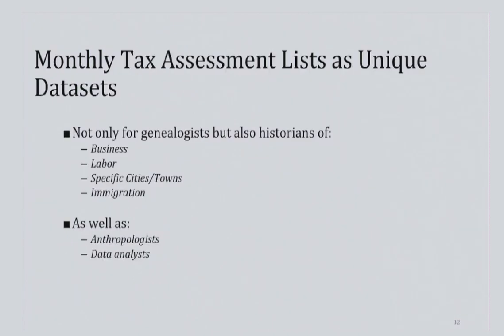There aren't too many records in the National Archives that so regularly and frequently track any one aspect of the life of the average American. Undoubtedly, the information recorded would be invaluable to the descendants of that individual. Beyond that, these records should be noted for their value to business historians, local historians, and labor researchers. The records can provide valuable insight into the movement and activities of certain groups of people, like immigrants at the time or women in business, though some data can only be interpreted by using names or other context clues.